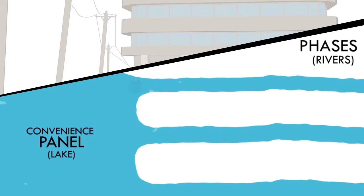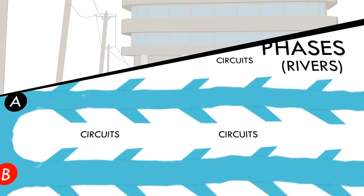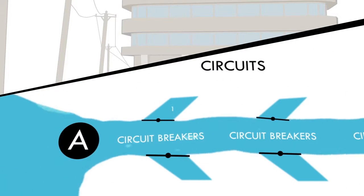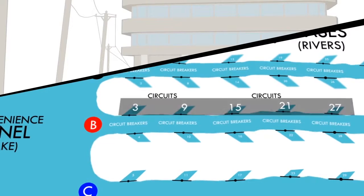We'll call them rivers. Rivers A, B, and C each have canals, or circuits, running off them with circuit breakers, or dams, that control the amount of water heading in and out. Each circuit is numbered in pairs. Each phase separates the pairs by six.